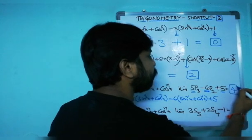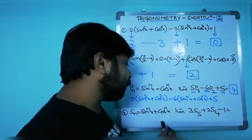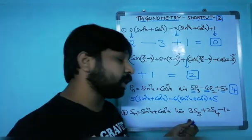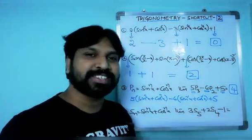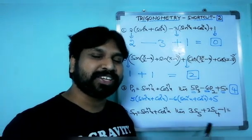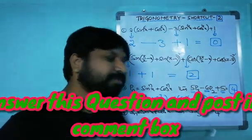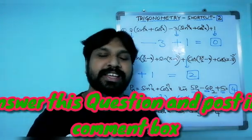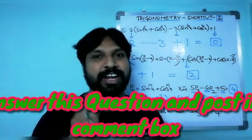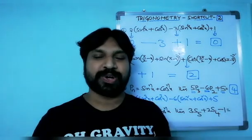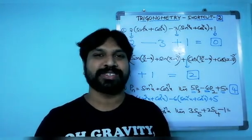Next question for you: if sₙ = sinⁿx + cosⁿx, find 3s₅ + 2s₄ - 1. This is your work — complete the sum and post your answer in the comment box. I'll check it and respond. I hope you enjoyed the shortcut. Thank you very much friends, thanks a lot!